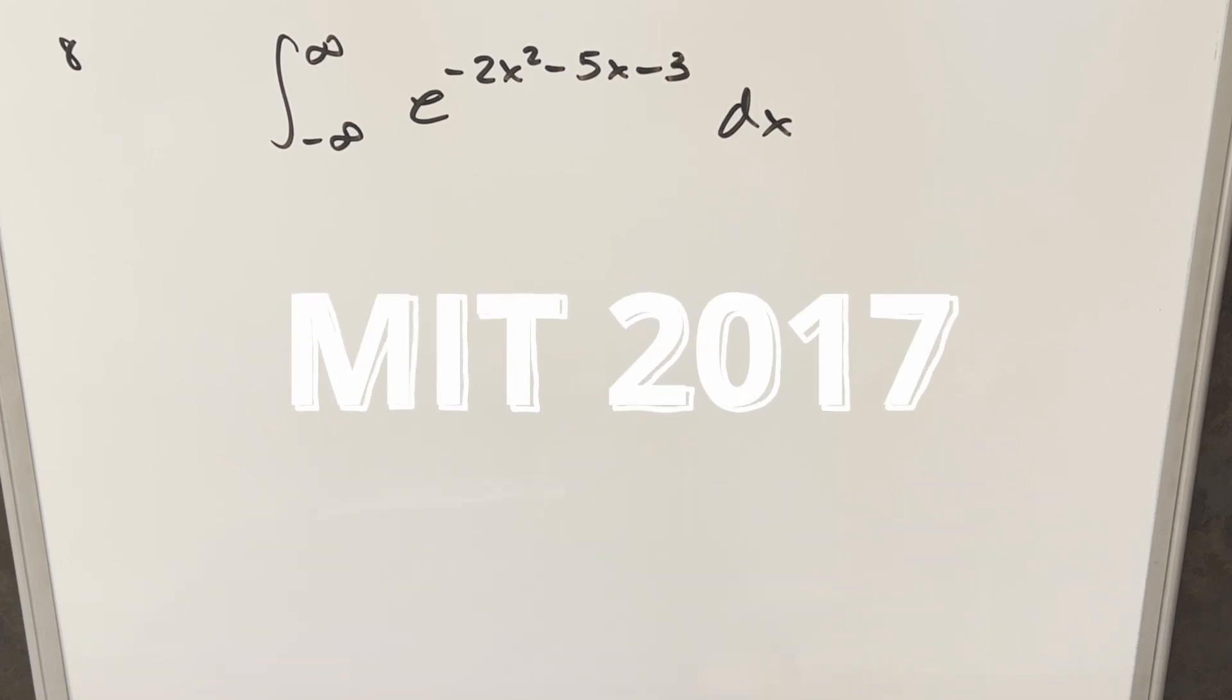Okay, we have a good one here today from the MIT integration meet 2017, number 8. We have the integral from minus infinity to infinity, e to the minus 2x squared minus 5x minus 3 dx.